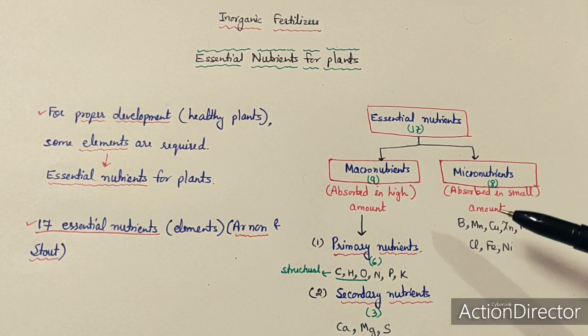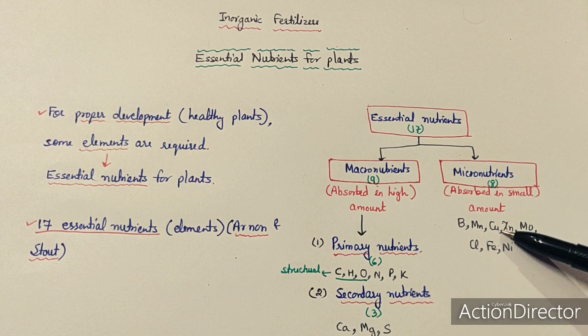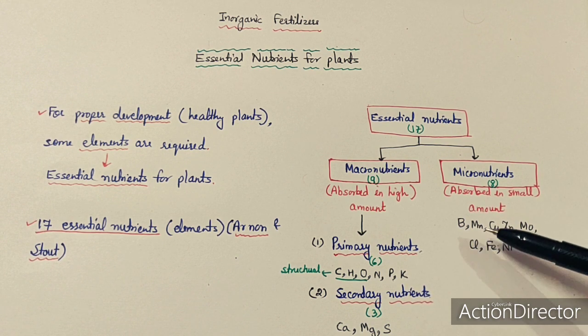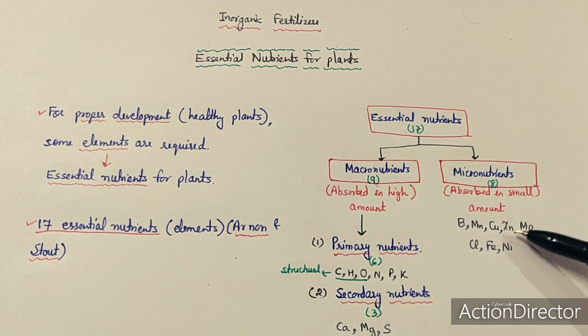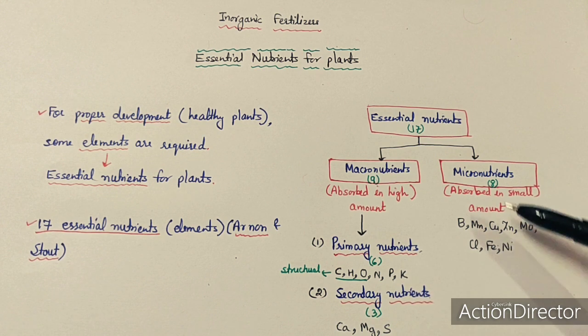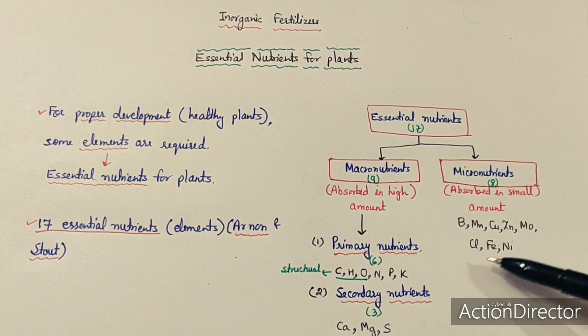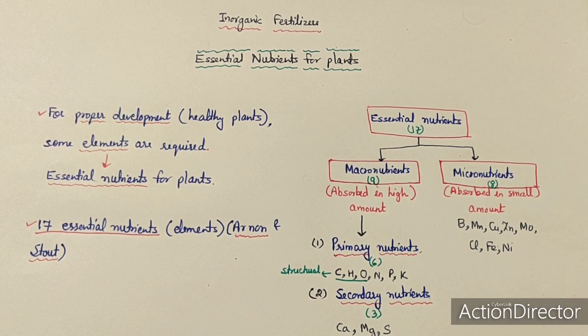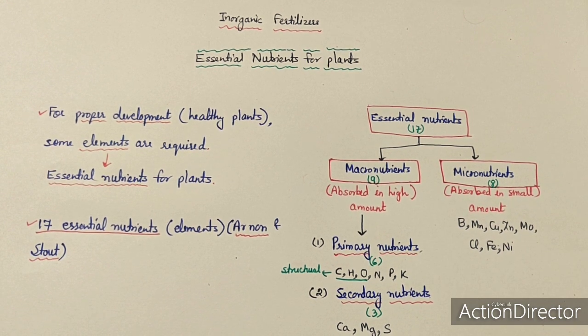The eight micronutrients, which are absorbed by plants in small amounts, are: boron, manganese, copper, zinc, molybdenum, chloride, iron, and nickel.